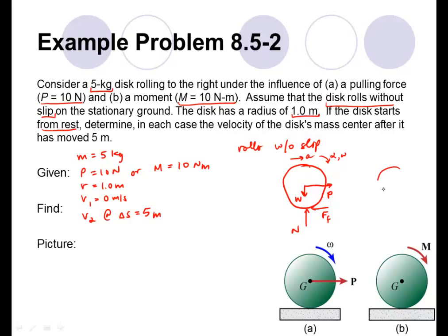In the second case, we again have the weight and a normal force. We have no applied force P, but we have an applied moment M. We can imagine that it's going to roll and accelerate in the clockwise direction and roll to the right. The moment can cause this angular acceleration in the clockwise direction. The weight and normal force are completely vertical, so the only thing that could cause translation to the right would be the friction force, and we can deduce its direction from the resulting angular and translational acceleration.